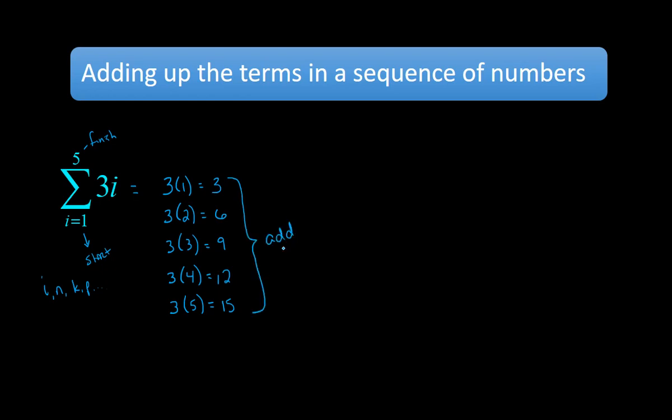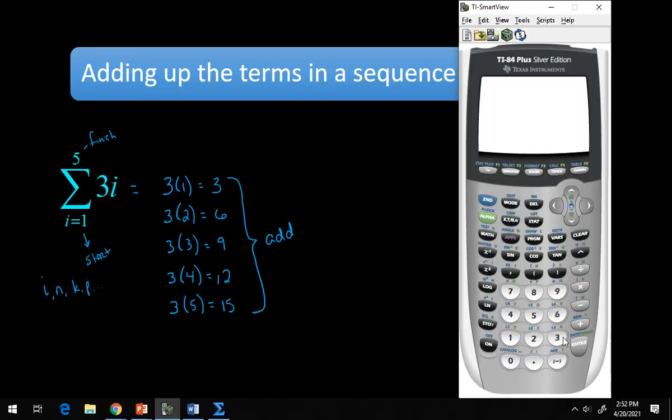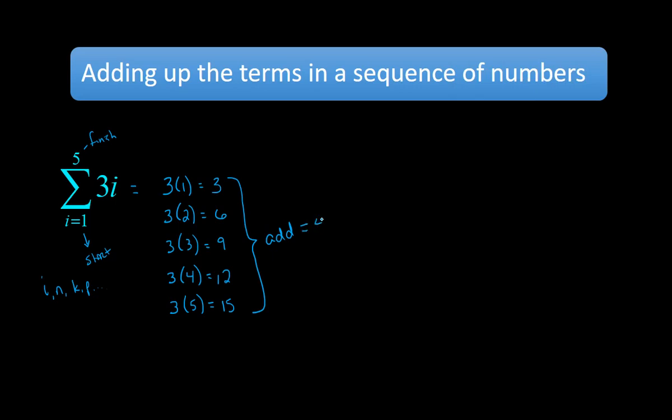So if you go to your calculator, and I'll pull up my calculator here, and I just sit there and I go, all right, 3 plus 6 plus 9 plus 12 plus 15. I know that the summation of 3i from 1 to 5, when I add all those up, is going to be 45.